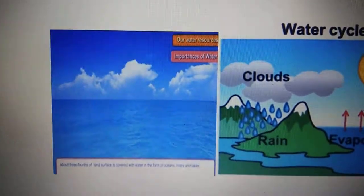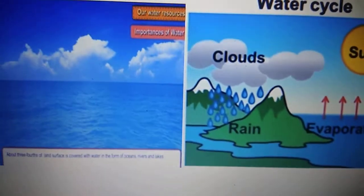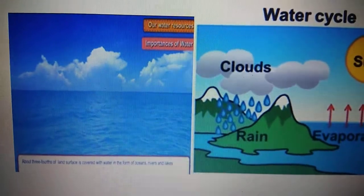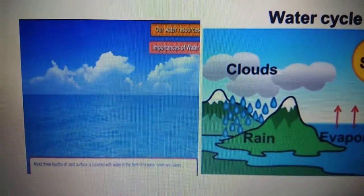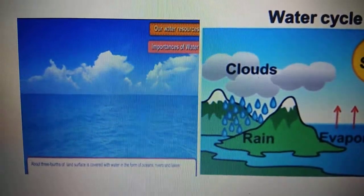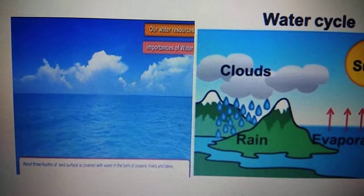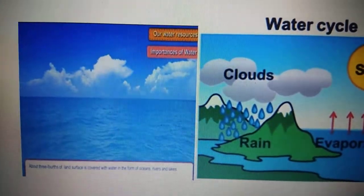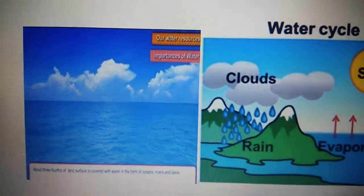This fresh water is either ground water or surface water found in rivers and lakes, or as water vapour in the atmosphere. So only 1% is available for use.